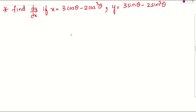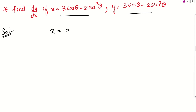A question is given here. We need to find dy/dx when x equals 3cosθ minus 2cos³θ, and y is given as 3sinθ minus 2sin³θ.